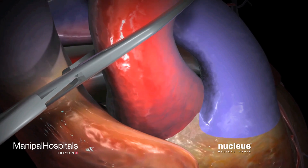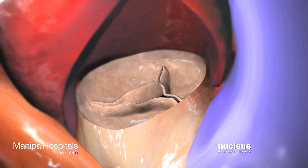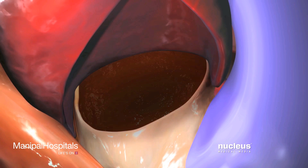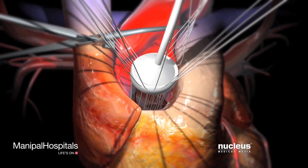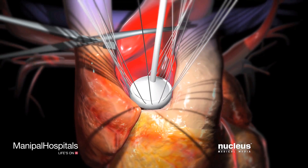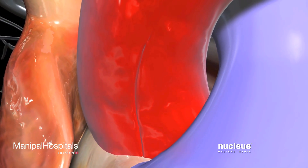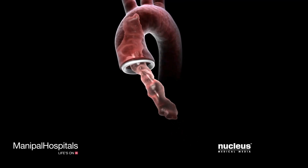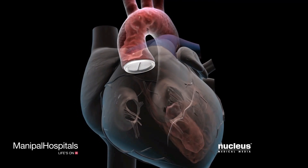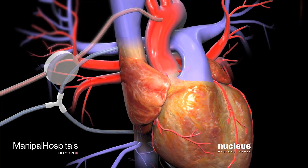Your surgeon will open the aorta to expose the aortic valve, make an incision around the edge of the damaged valve and remove it. Your surgeon will then carefully sew the replacement valve into place and close the aorta with stitches. At this point, blood will again be allowed to flow into your heart to check the function of the new valve.